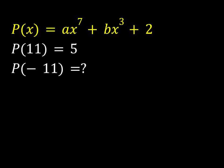So let's take a look. With polynomials substitution is always a standard method. So we're going to start by replacing X with 11 here. So if you replace X with 11 on both sides you get A times 11 to the 7th power plus B times 11 to the 3rd power plus 2. And we're given that P of 11 is equal to 5.